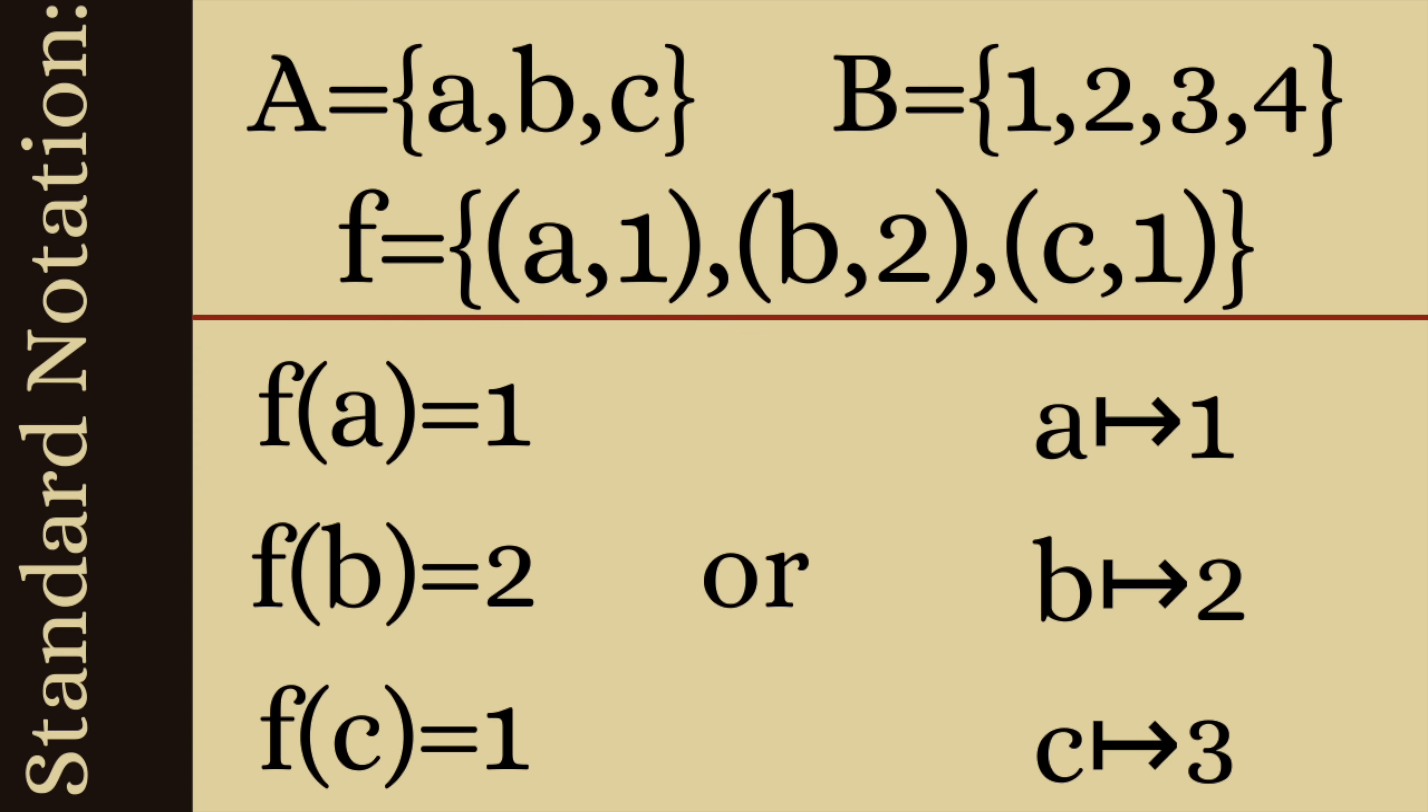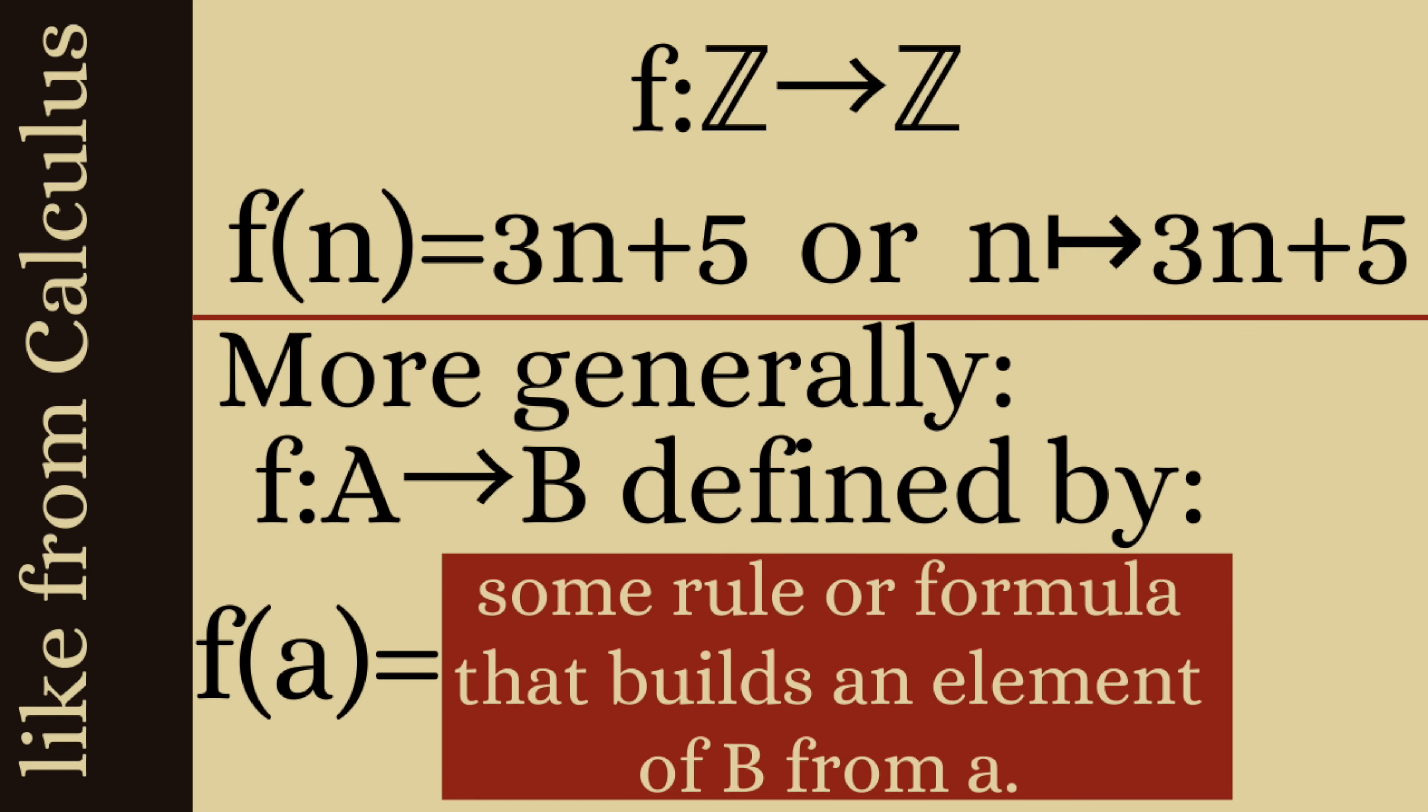Or we could write it as a is being sent to 1 using that arrow with the little foot on it. B is being sent to 2 and c is being sent to 1. That should have been a 1. That's a typo. And then often we have some sort of formula or a rule for writing down a function and this is like from calculus. So let's look at an example of that.